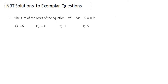Hey guys, so we are on to question 2 of the NBT solutions to the exemplars, and it says the sum of the roots of the equation minus x squared plus 6x minus 5 equals 0.